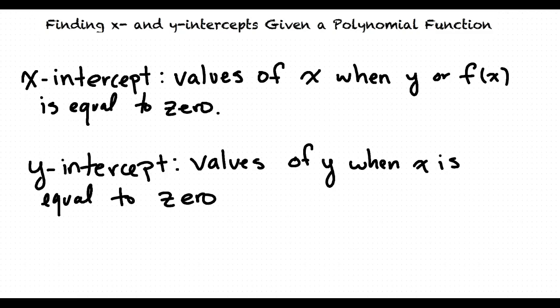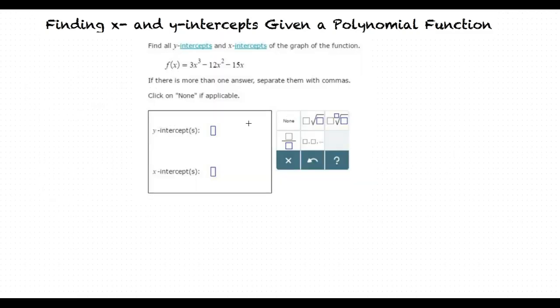Okay, so how do we find the x and y-intercepts of a polynomial then? Well, let's work through an example together.